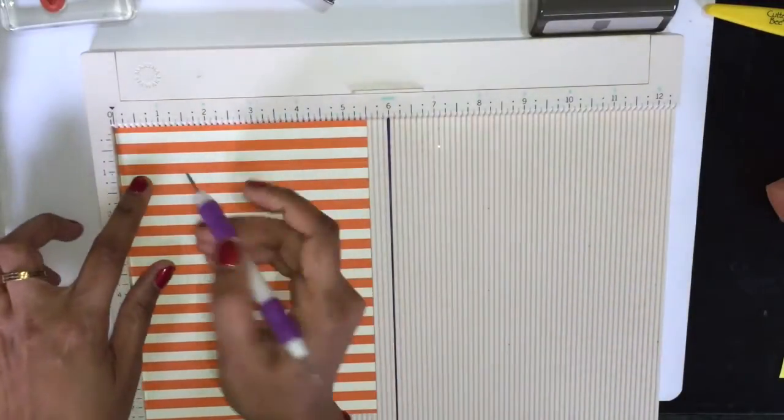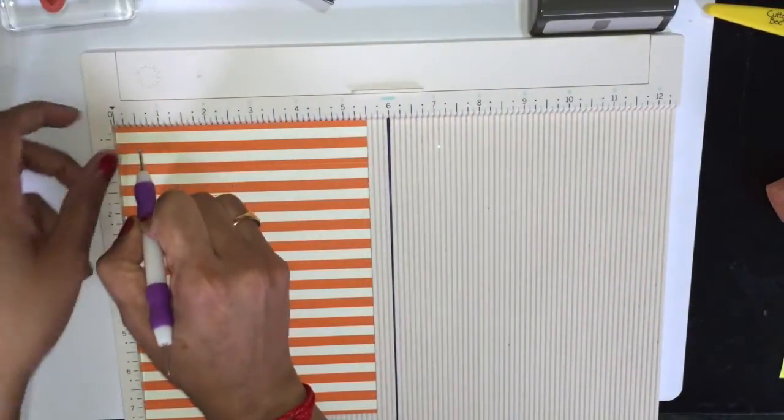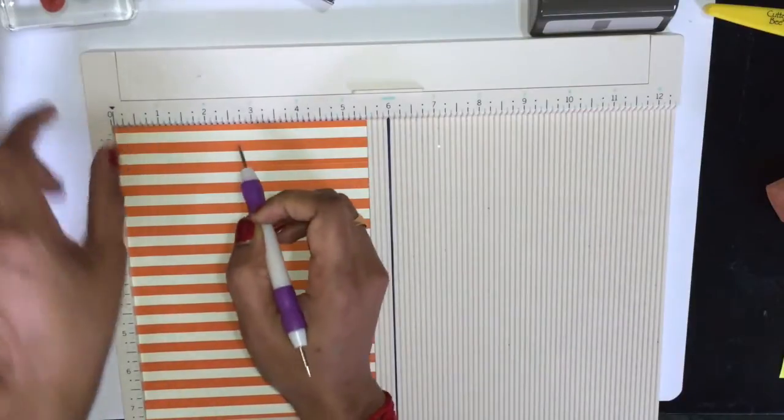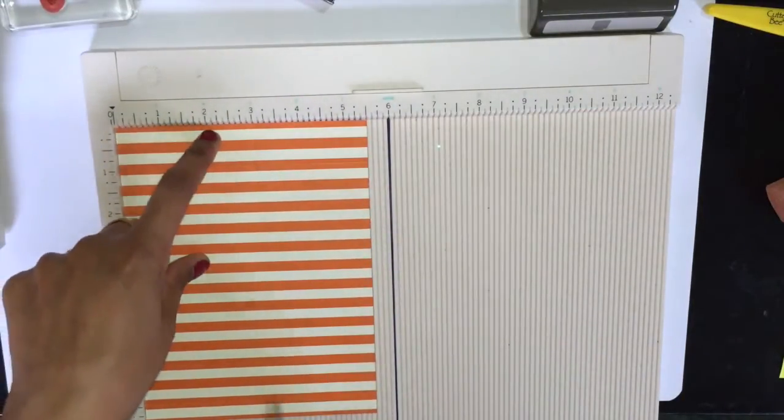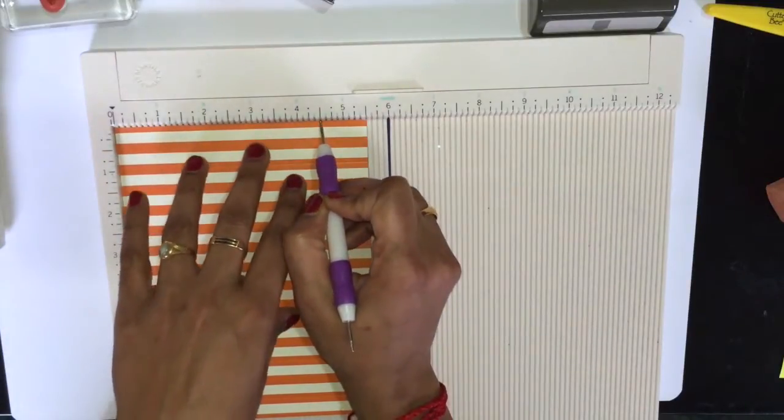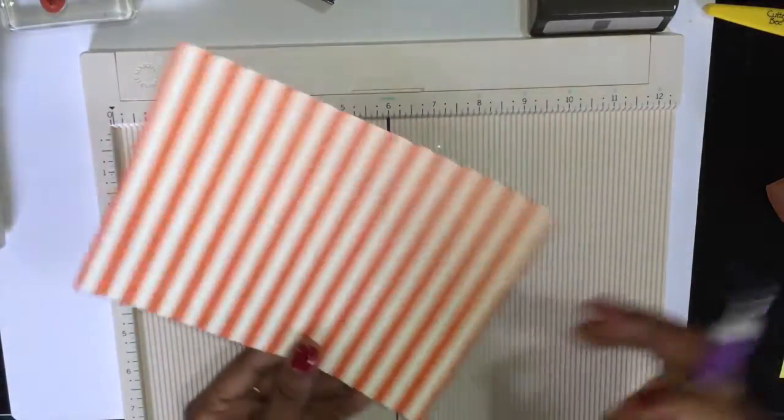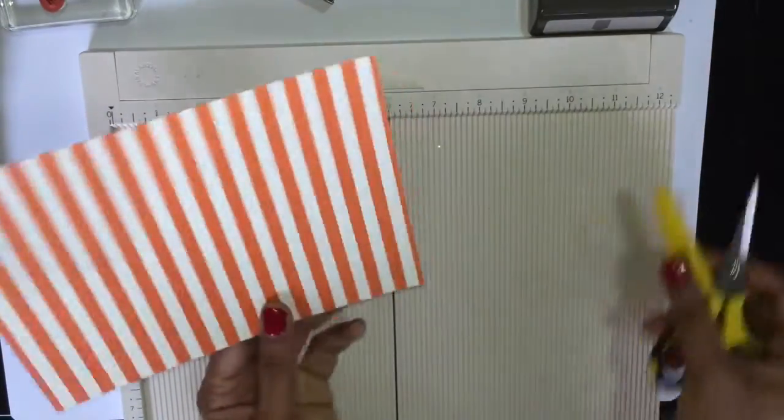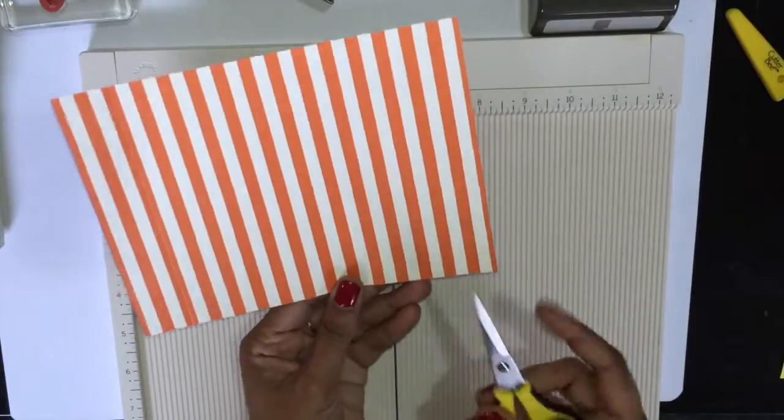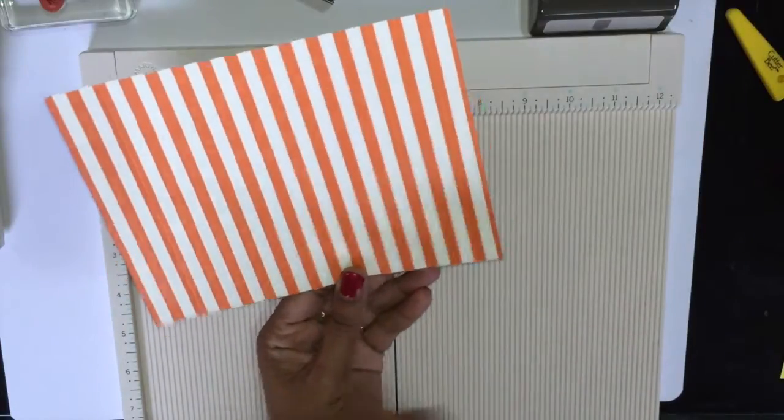At the five and a half side, score at half inch, two, three, and four and a half. Done. It's really very busy pattern paper, so make sure. Now cut the half inside these two.